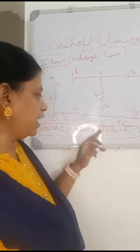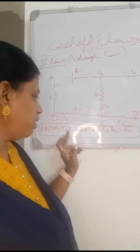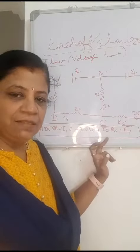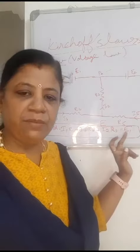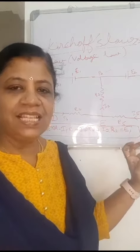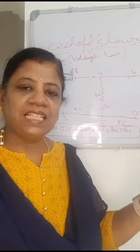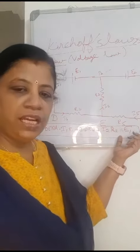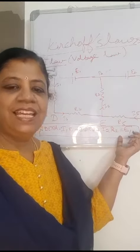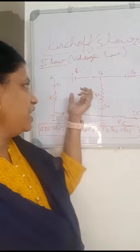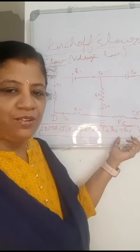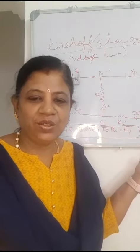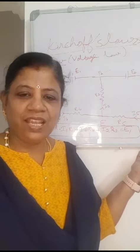Let us consider this closed network A-D-E-D-A only. According to Kirchhoff's Second Law, we write that i1·r1 plus i4·r4 plus i2·r2 is equal to the total EMF in the circuit, which is equal to E1. Therefore, right here E1. This is Kirchhoff's Second Law, that is equal to the Voltage Law.